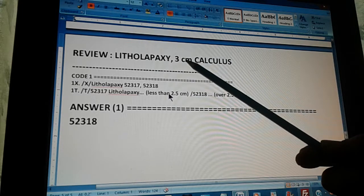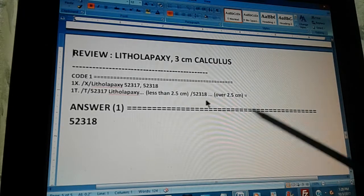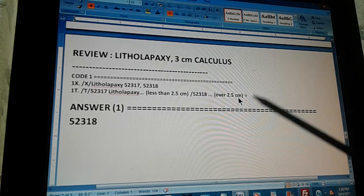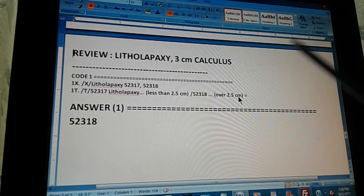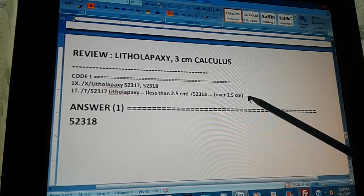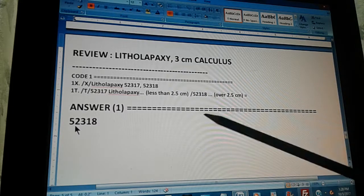Now, it's very simple. Ours is 3 centimeters, which is bigger than 2.5. So, that's not our code. The next one, 52318 is over 2.5, which 3 centimeters is over 2.5. So, that's our code. That's why we have an equal sign after that code. Meaning that this is our code.